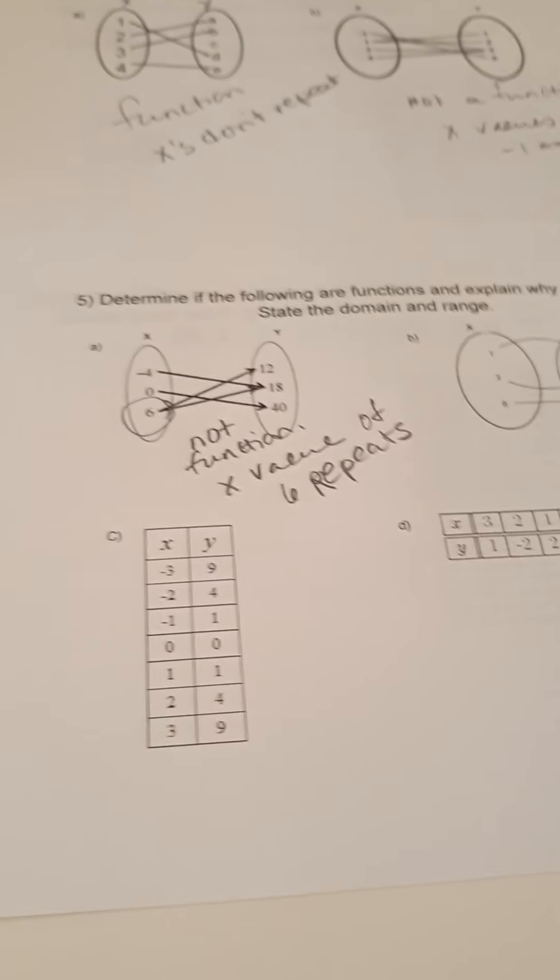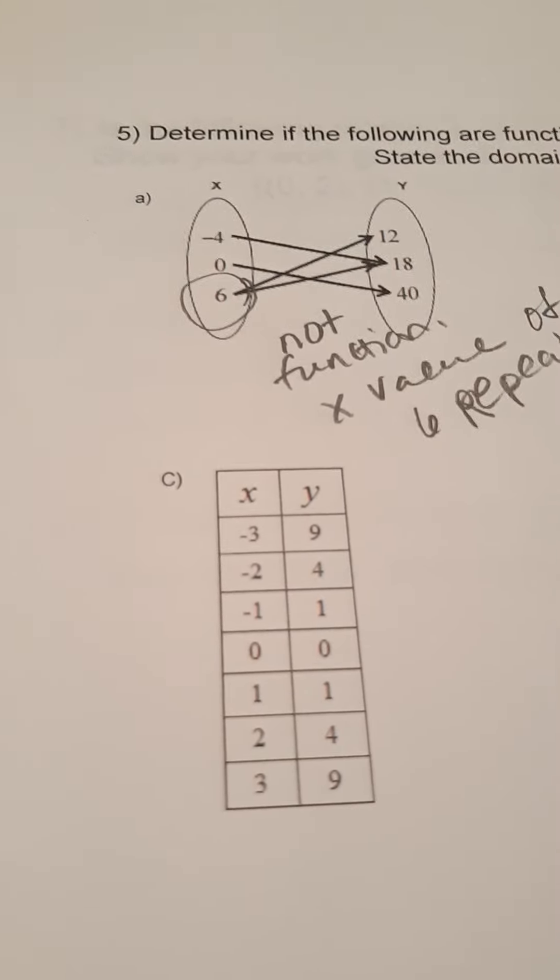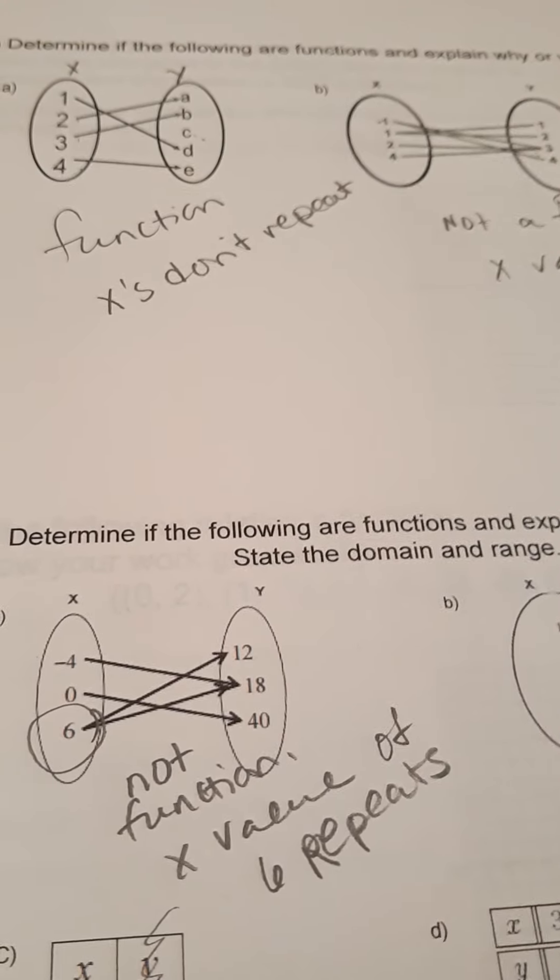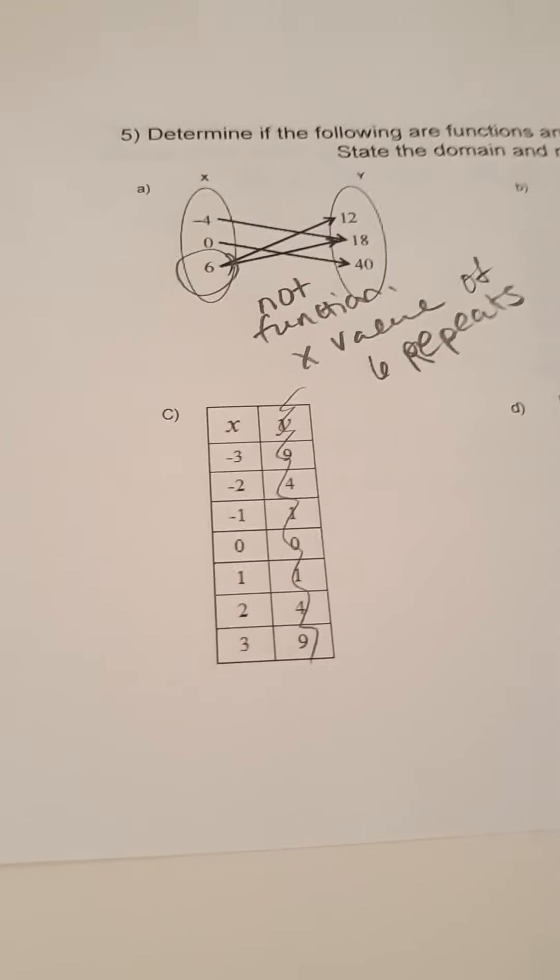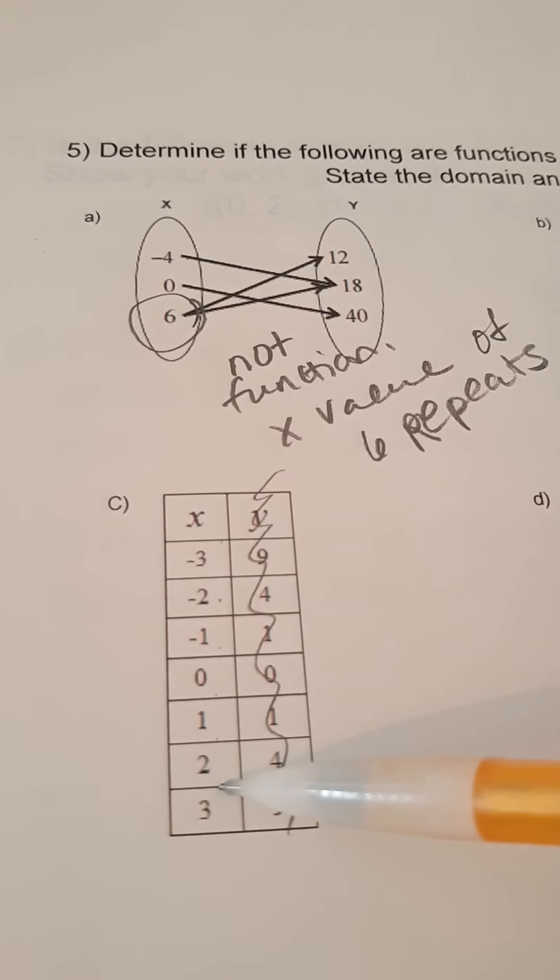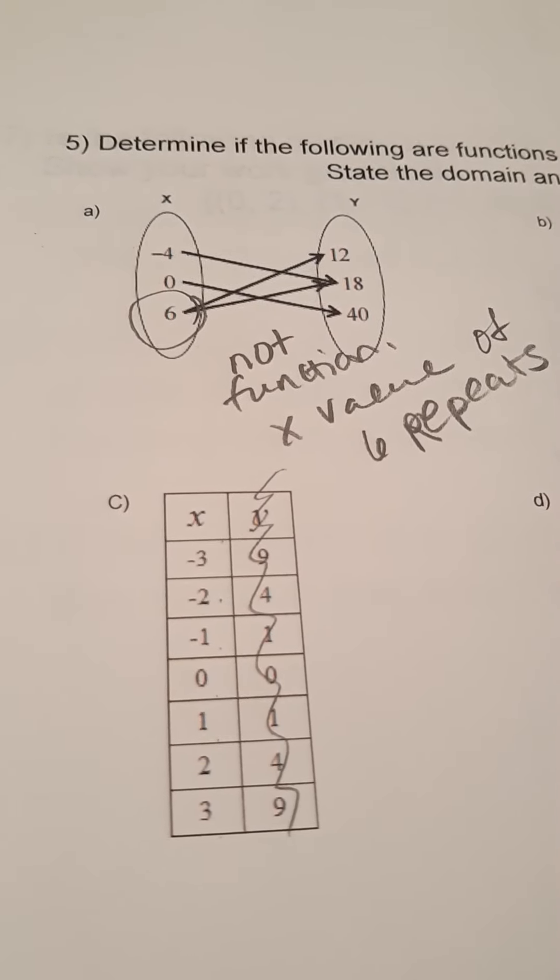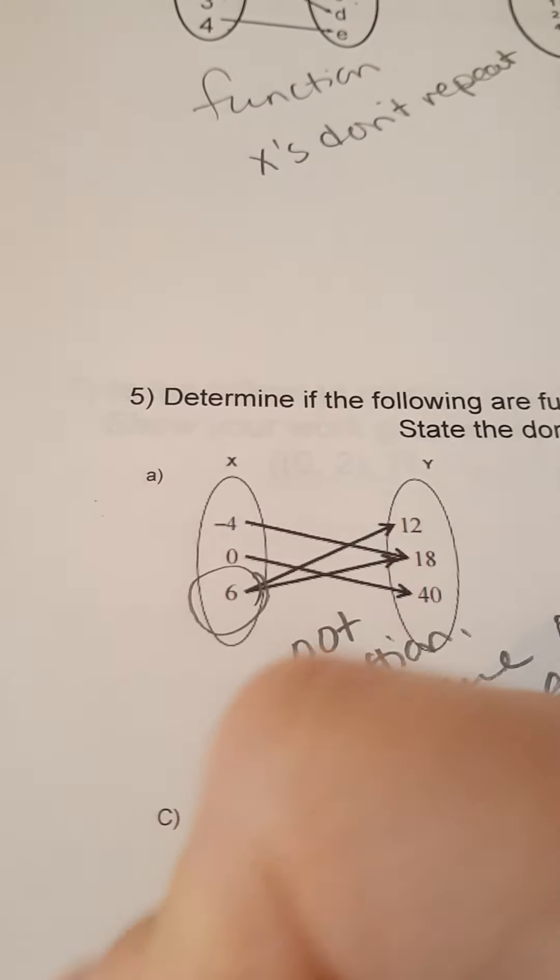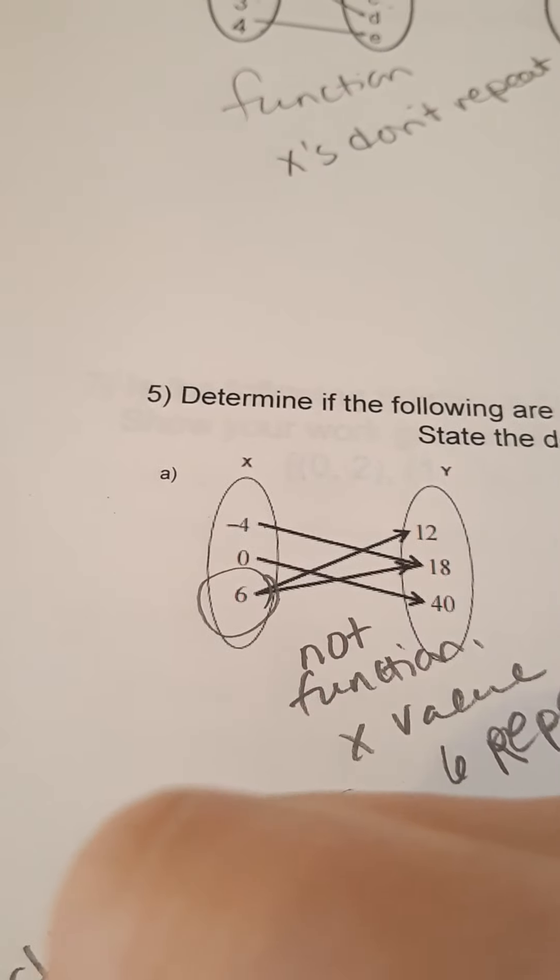And then for c and d, we have some t-charts. We have a vertical t-chart. We have a horizontal t-chart. Don't look at the y's. Who cares? You could get dramatic and cross them out. The y's don't impact the answer. Do your x values in c repeat? No, they do not. So, this is a function. Your x's don't repeat.